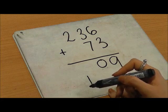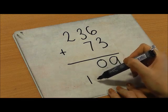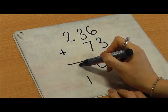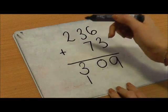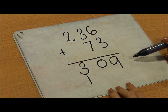Now, I'm going to add up my hundreds column. 2 and nothing. Don't forget him. 2 and 1, 300. 236 add 73 equals 309.